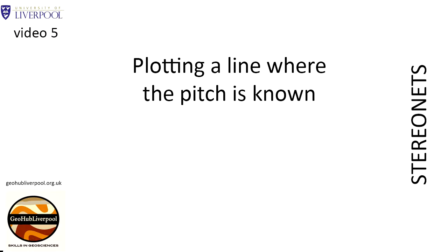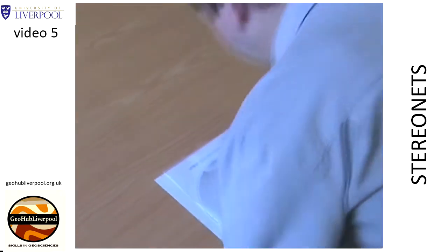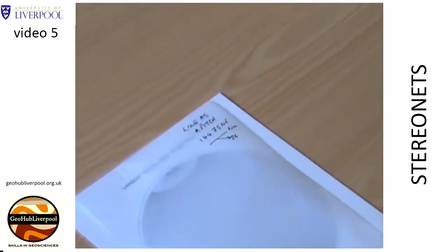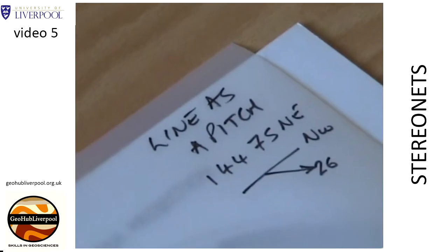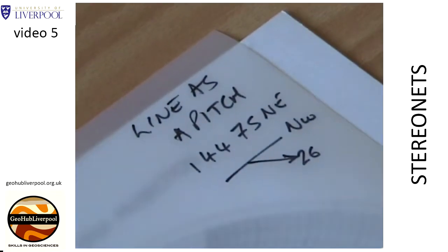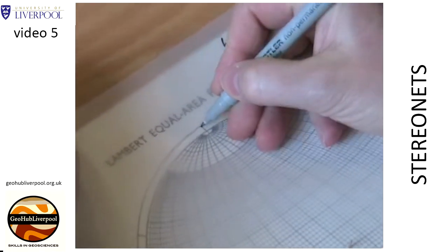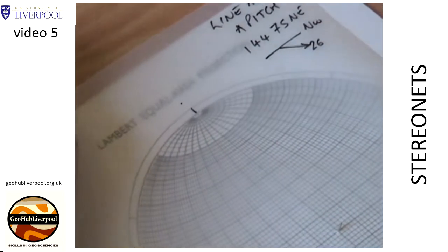This clip shows how to plot a line where the pitch of the line is known. The pitch is the angle between a given line and the horizontal, measured in a plane which contains the line. In this example, the line has a pitch of 26 degrees northwest on a plane which has a strike of 144 degrees and a dip of 75 degrees towards the northeast.